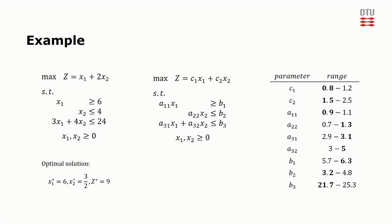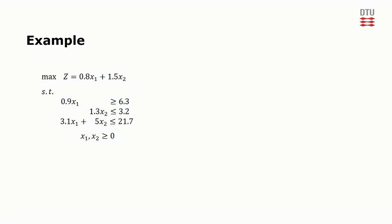We can now solve the problem using the highlighted values of each parameter. The optimal solution to this problem is x1 equal to 7 and x2 equal to 0. The optimal objective value is 28 fifths, which is equal to 5.6. This is quite a lot lower than the expected value of 9 that we had before.